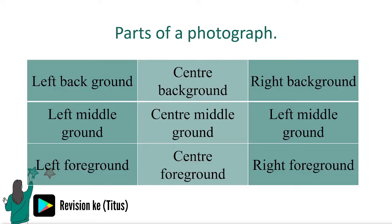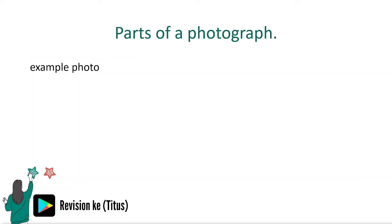We are going to look at the parts of a photograph. Assuming this rectangle is a photograph you are holding in your hand, you can subdivide it into nine sections. We have the left background, the central background, and the right background. We have the left middle ground, the central middle ground, and the right middle ground. We have the left foreground, the central foreground, and the right foreground. You can try dissecting an example photo on your own.